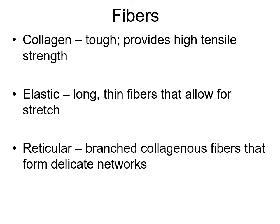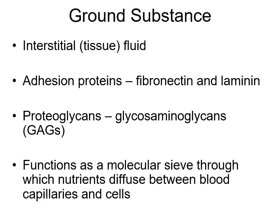Fibers associated with connective tissue proper: collagen is tough and provides high tensile strength; elastic allows stretch up to 150% and snap back; reticular is very delicate and usually forms the stroma of glands and organs. Ground substance, otherwise known as interstitial fluid, contains GAGs (glycosaminoglycans) - also called proteoglycans, meaning protein-sugar - and adhesion proteins such as fibronectin and laminin, which help keep everything together.